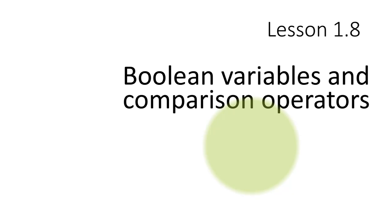Boolean variables can store only true or false. These are called truth values sometimes, so they can store only true or false, and there are many applications for these as we will shortly see.